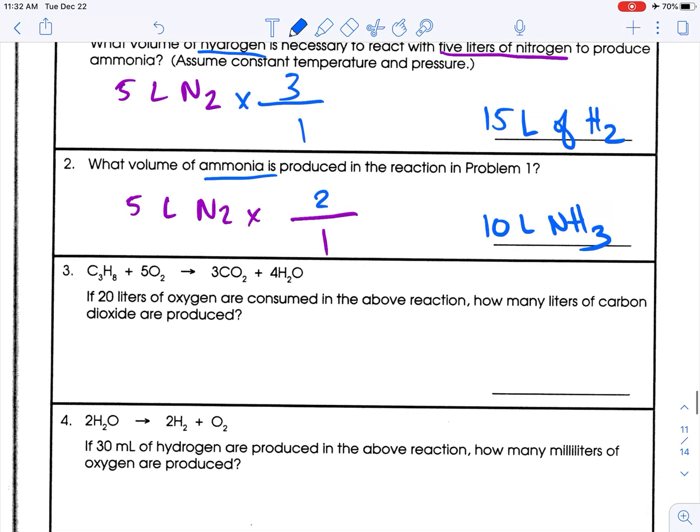This is called a combustion reaction. If 20 liters of oxygen are consumed in the above reaction, how many liters of carbon dioxide are produced? So I am looking for carbon dioxide. So this is what I seek. So that's going to be what's important.